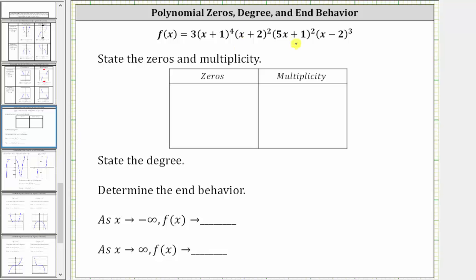We are given a polynomial function in factored form and asked to determine the zeros and multiplicity, as well as the degree and end behavior. The zeros of the polynomial function are the x values where the function value is zero. Because the polynomial function is in factored form, the values of x that make each factor equal to zero are the zeros of the polynomial.